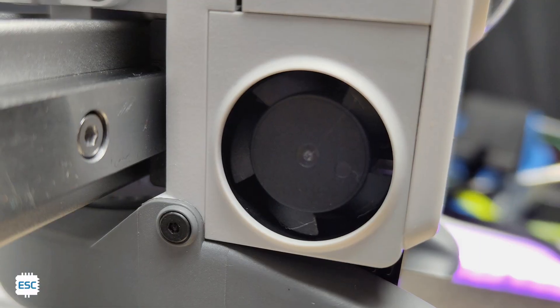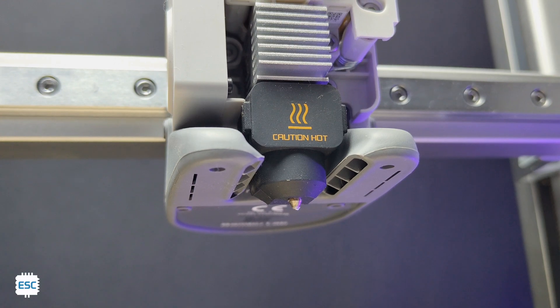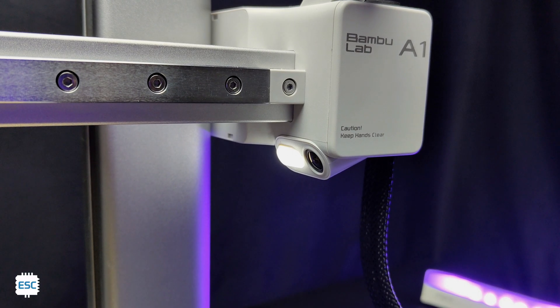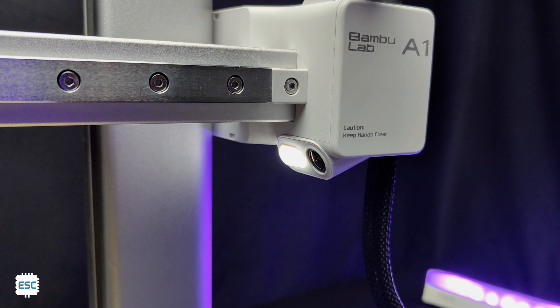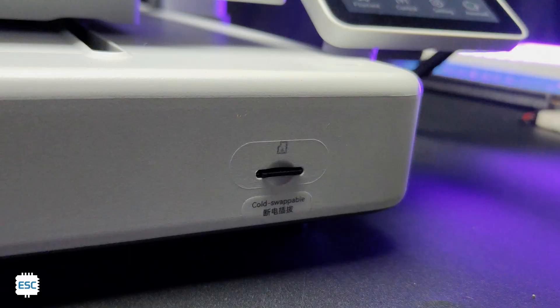Here are the cooling fans for the printing model. Here you can see the camera which is a 1080 pixel camera which is used for shooting timelapse and monitoring the printing status. Finally, here is the SD card slot.